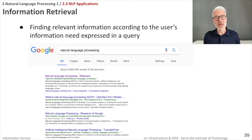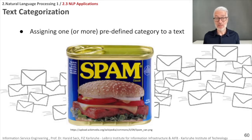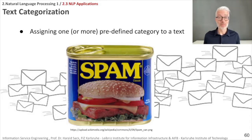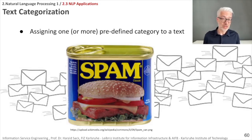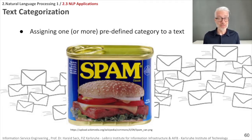Now let's come to a more demanding task: text categorization. The most prominent example is the spam filter in your email program, which is trained to automatically separate non-spam emails from spam. These filters have to be trained according to predefined categories. Text categorization is more than just spam filtering — for example, given a newspaper article title, you can determine whether it belongs to sports, politics, or cultural issues.